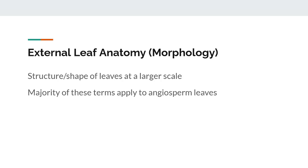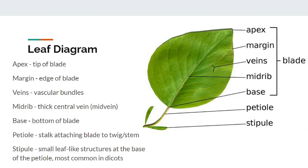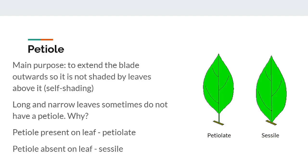Now we will move into leaf morphology, or the structure and shape of leaves at a larger scale. The majority of these terms deal only with angiosperm leaves. Here is a diagram of a leaf. The blade or lamina of the leaf is the big flat section. The apex is the tip of the blade. The margin is the edge of the blade. The veins are the vascular bundles that transport water, nutrients, and sugars. The midrib or midvein is a thick vein that runs down the center of the blade, and the base is the bottom of the blade. The petiole is the stalk that attaches the blade to the stem or twig, and the stipules are these little leaf-like structures attached to the base of the petiole. The petiole can hold the leaf blade out and twist it so that the blade is exposed to the most sunlight possible, and so that leaves above don't cast shade on it, which is called self-shading.